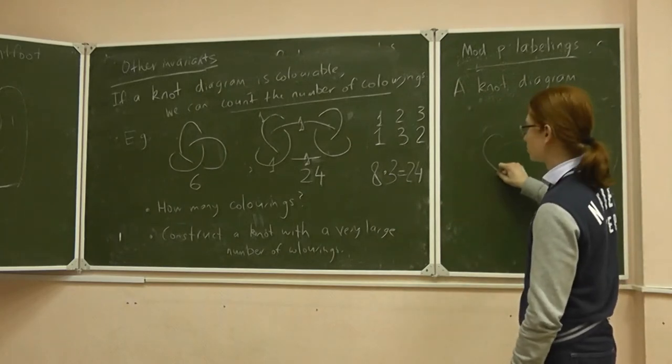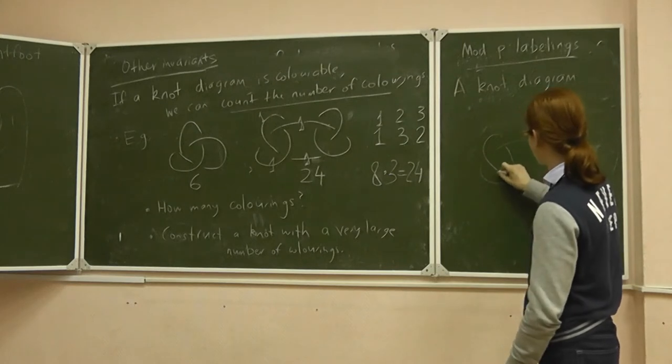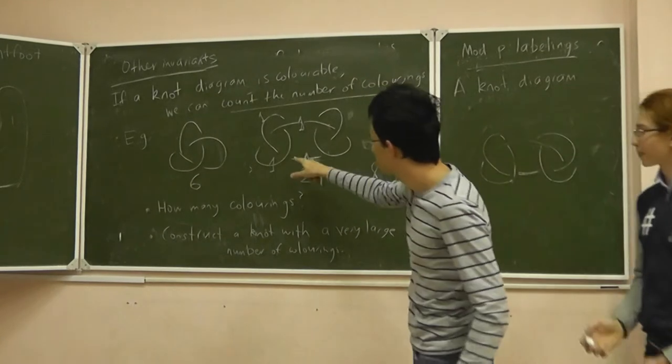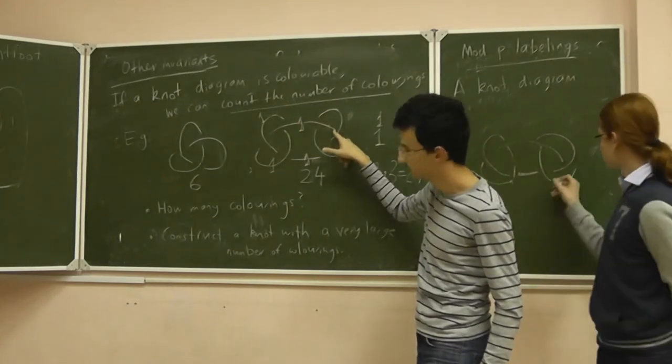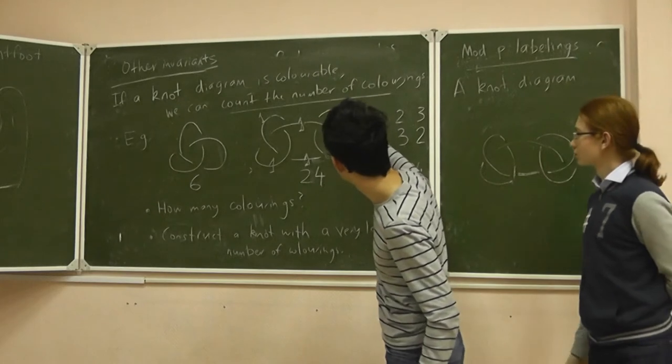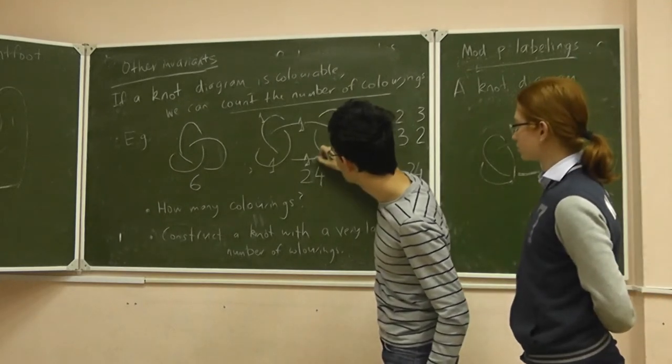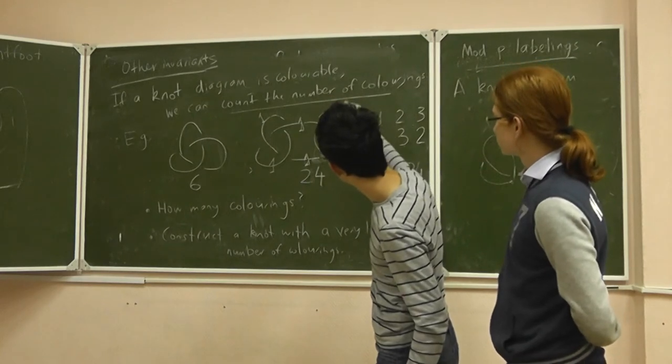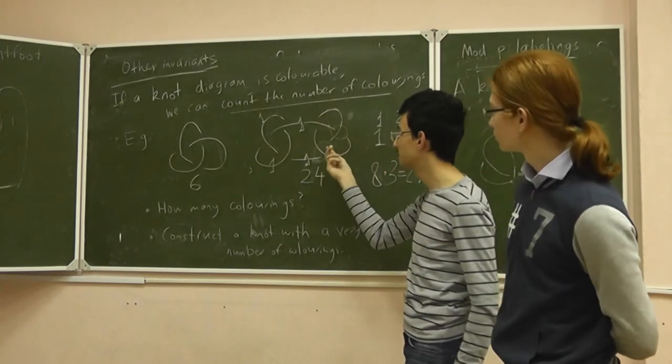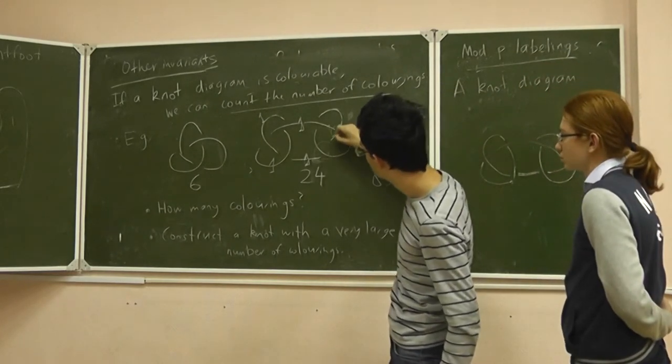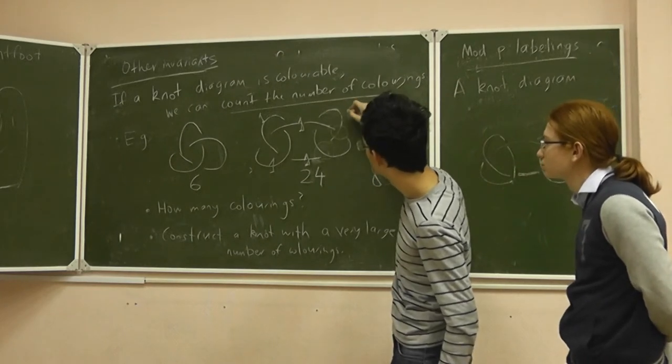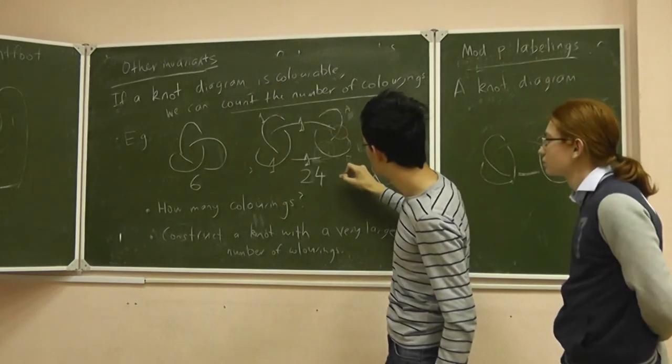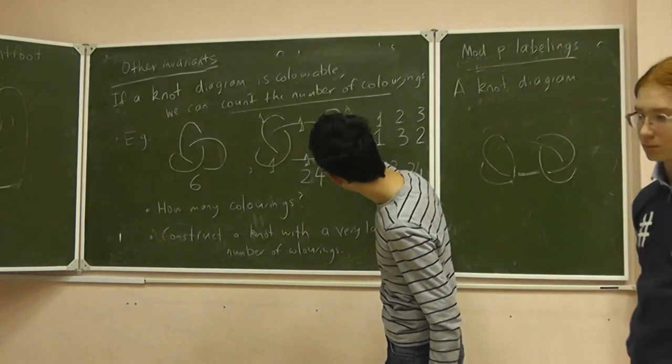Because these two arcs must be of the same color, because this one participates in this overcrossing, and this one in this overcrossing, and also in these overcrossings. There are these and these arcs, and both of them participate in both overcrossings. I mean, if we know the color of this thing, of this arc, let's say it's A, and if we know the color of this arc, that's B,